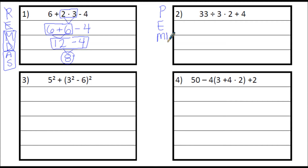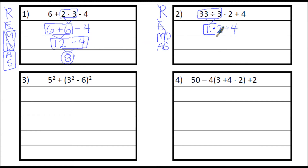Write PEMDAS again for number 2. I like to put M and D next to each other and A and S next to each other so we see they're in the same step. There are no parentheses or exponents. I do see multiplication and division, but moving left to right the division comes first: 33 divided by 3 is 11. Then multiply: 11 times 2 is 22. Then add: 22 plus 4 is 26 — that's the final simplified answer.